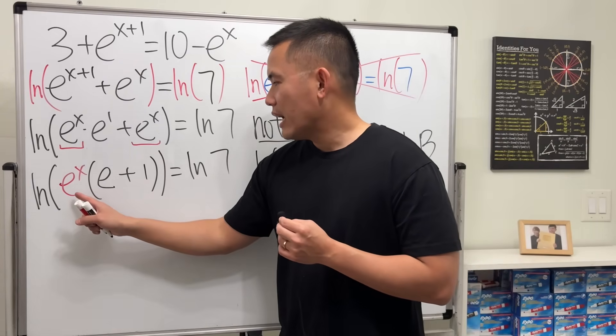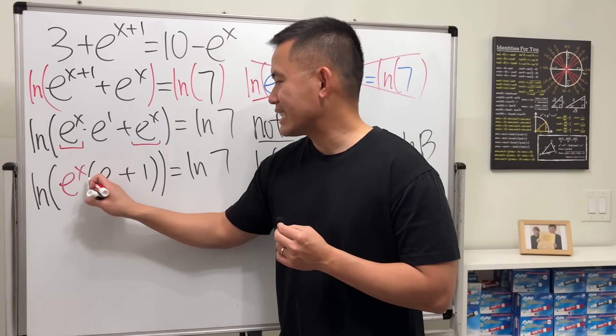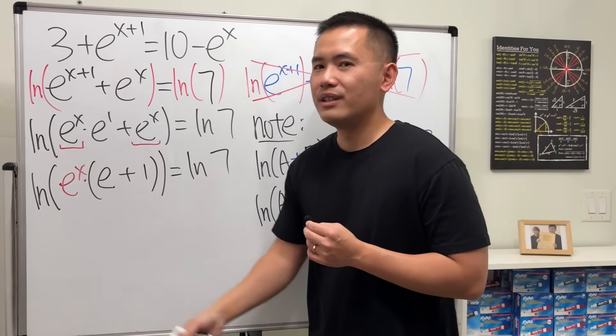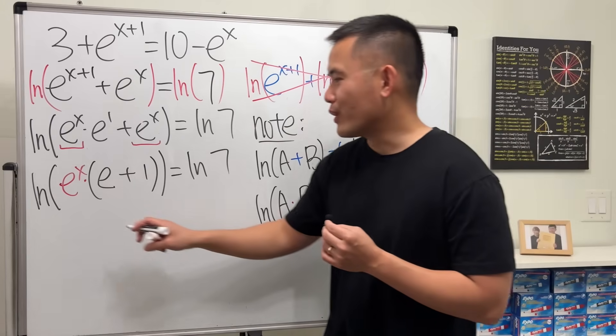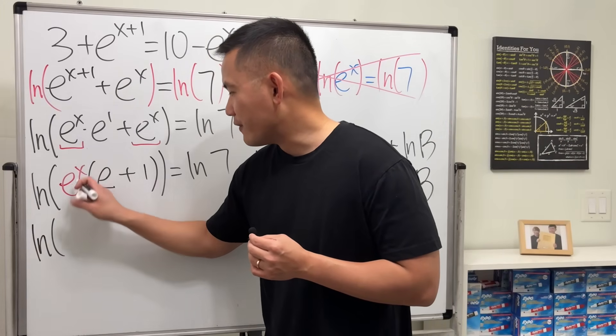Now, as we can see on the inside, we have e^x times this quantity. So we can utilize this property to break it apart.